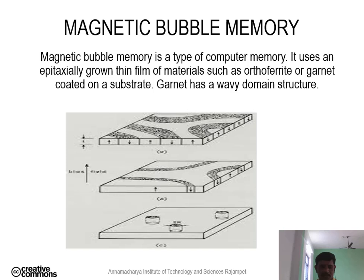Coming to the examples of magnetic bubble memories: rare earth orthoferrites, hexagonal ferrites, rare earth ferromagnetic garnets, and amorphous bubble materials. These are a few examples of magnetic bubble memories.